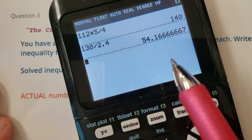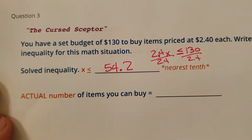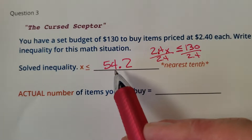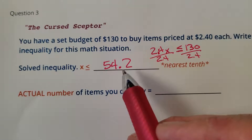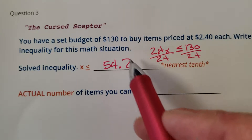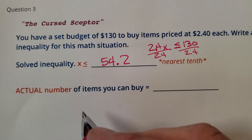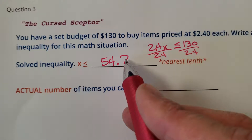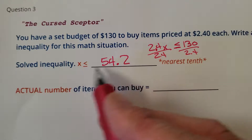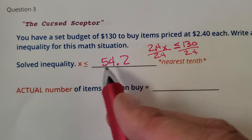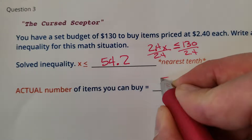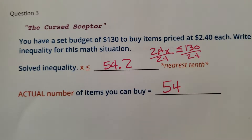All right, the actual number of items you can buy. You have to be less than or equal to 54.2. So let's assume that you can't buy a decimal of a thing. So what could you actually buy? Well, you can't buy 54.2 because that doesn't work — you can't buy 0.2 of something. So you might have to go down, less than, to the next actual thing you can buy.